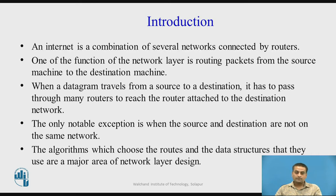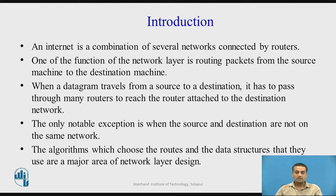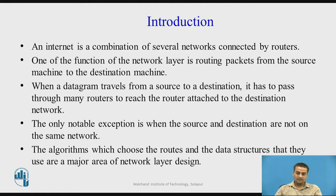Routers forward packets based on decisions made by routing algorithms. When a packet travels from source to destination, it passes through many routers to reach the one attached to the destination network. The notable exception is when the source and destination are on the same network — in that case, the packet only passes through a switch.